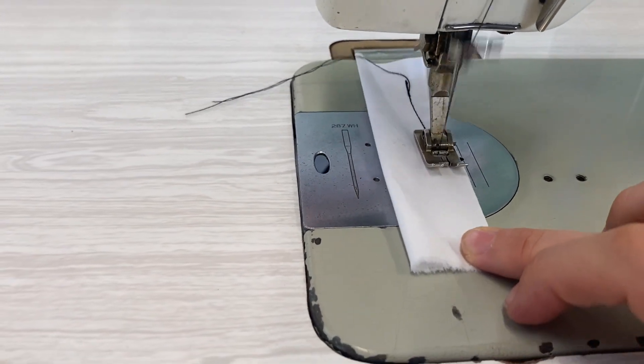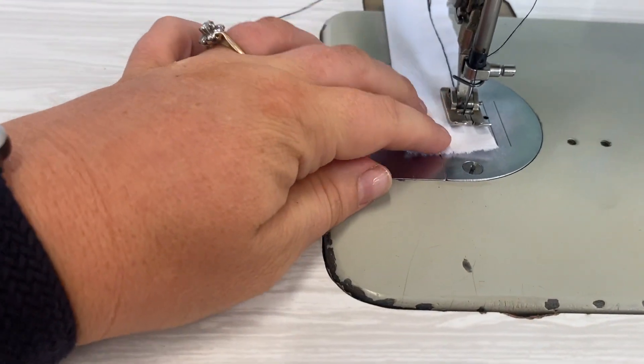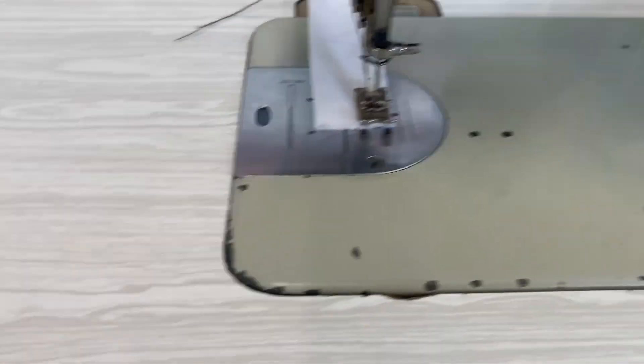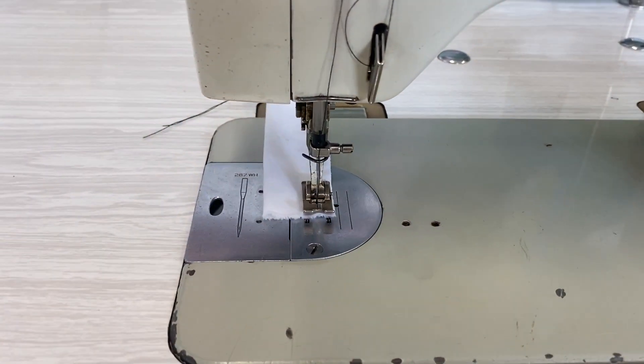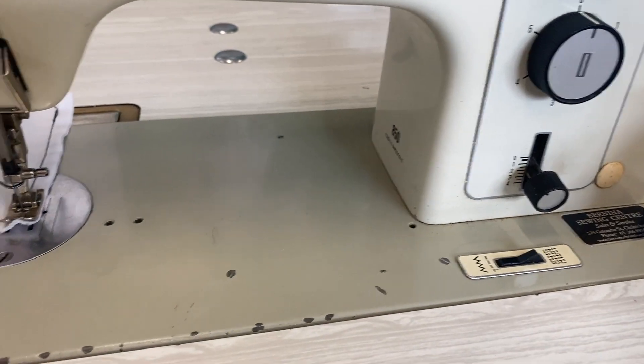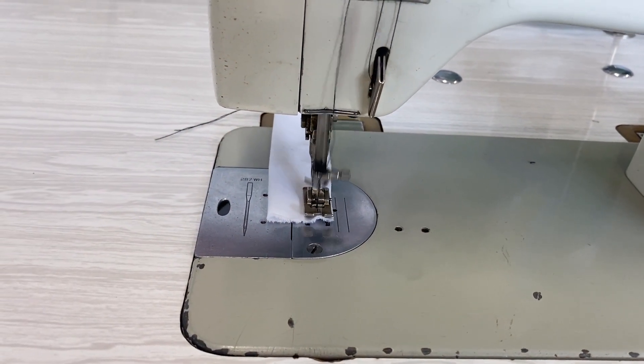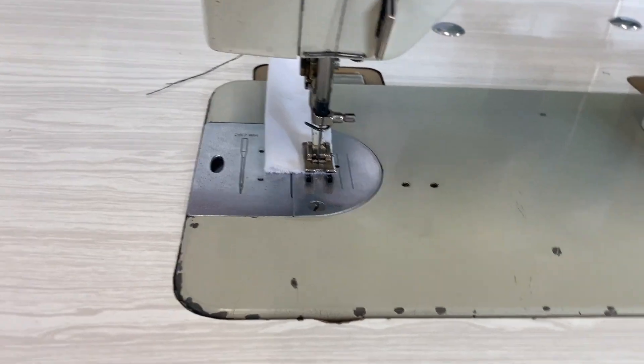You can do your stitching, and then once you get to the end, you'll do your back tack again. So up, back tack a bit, down, and then you're all done. The machine can go very, very fast, so be careful.